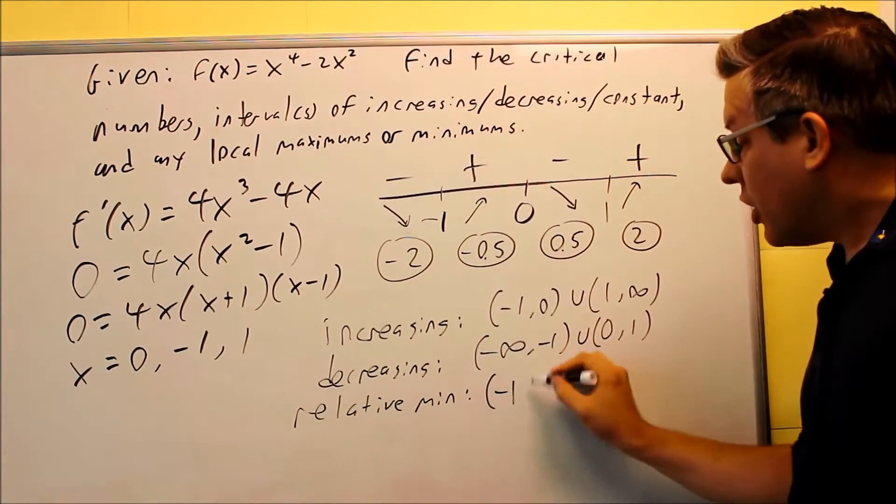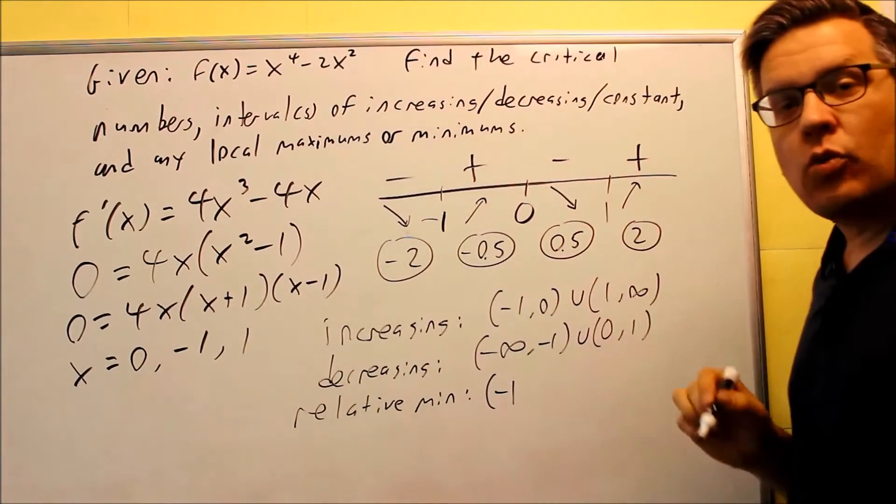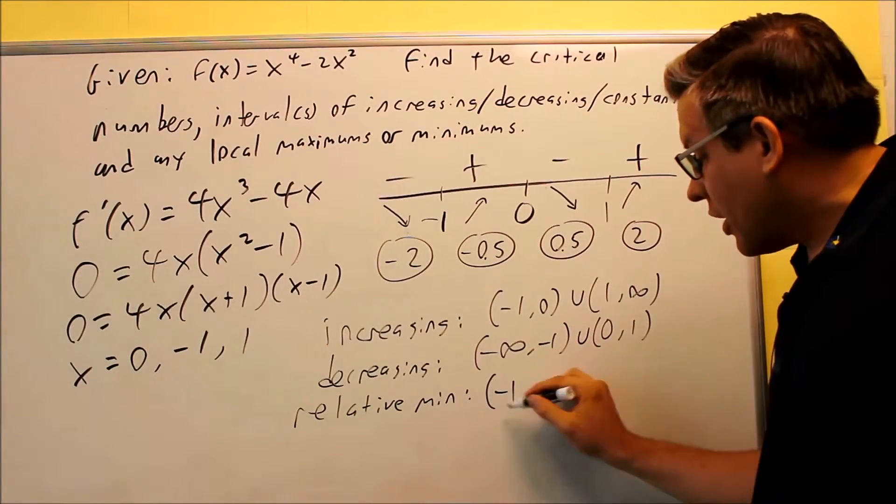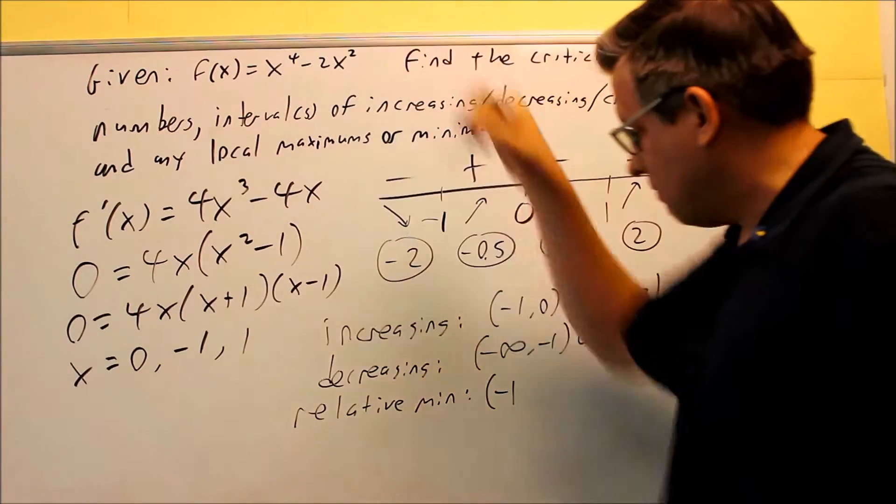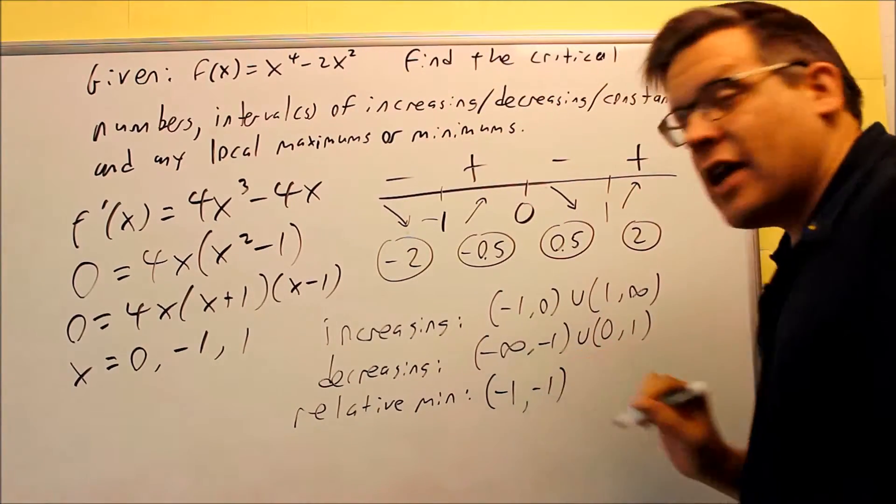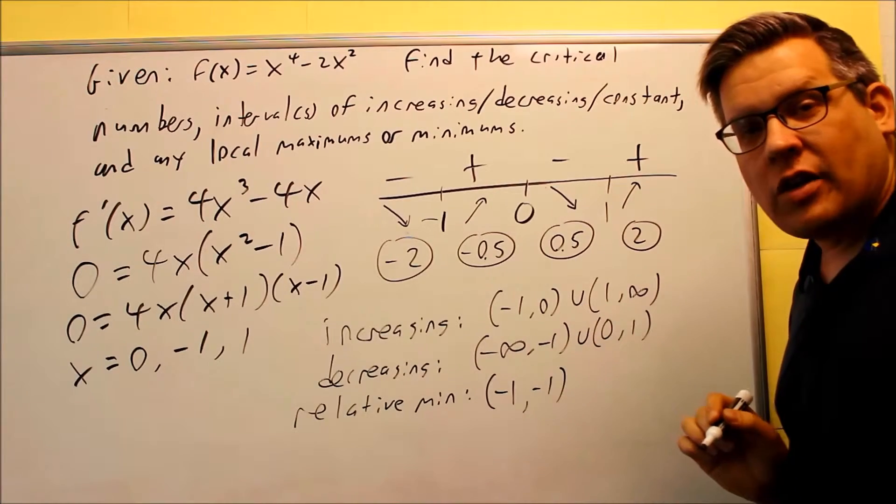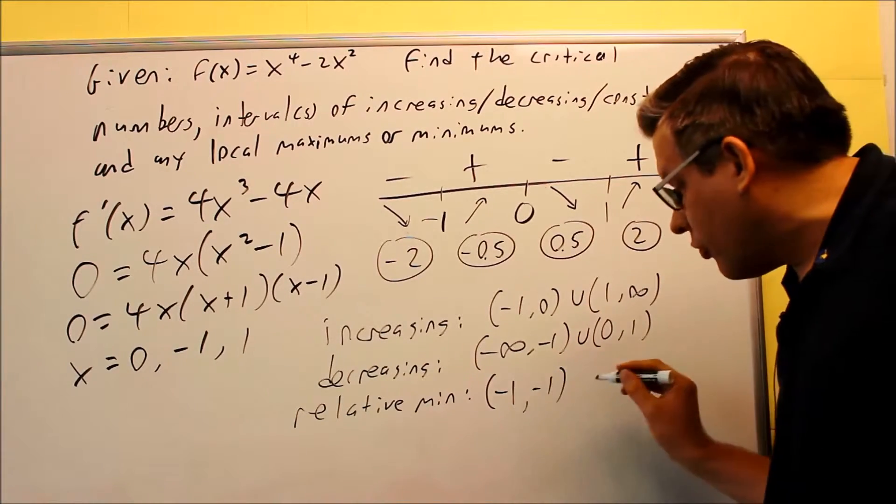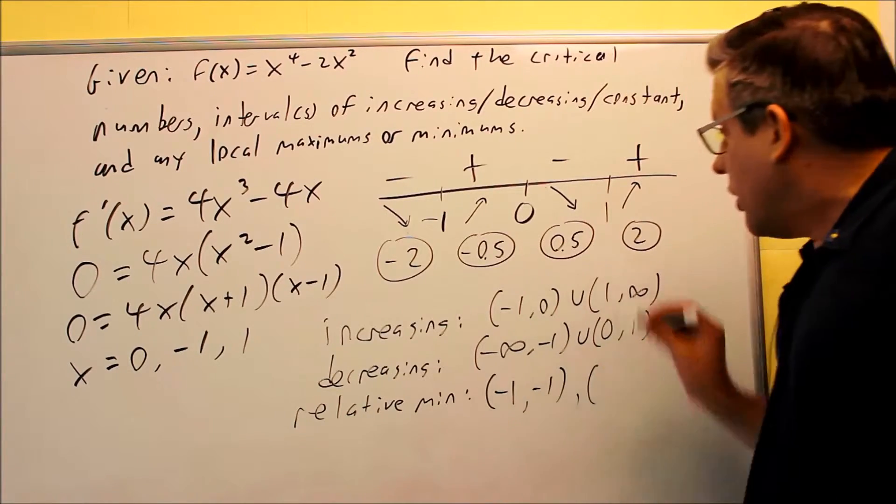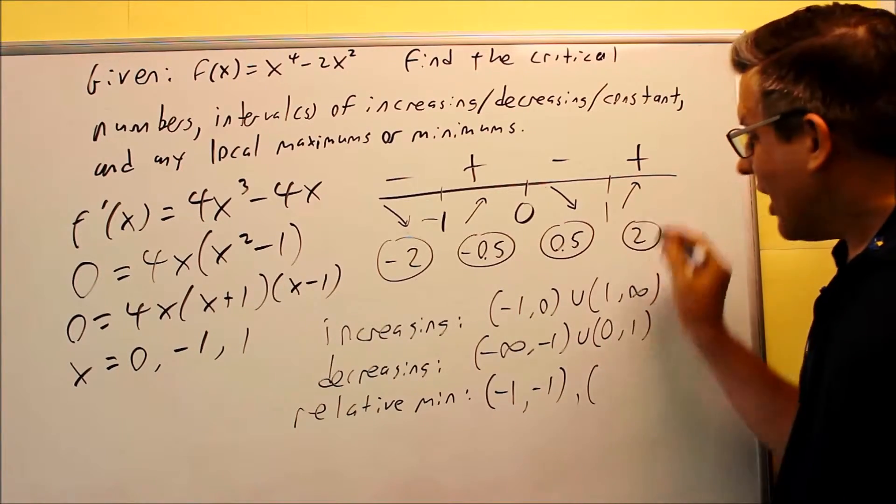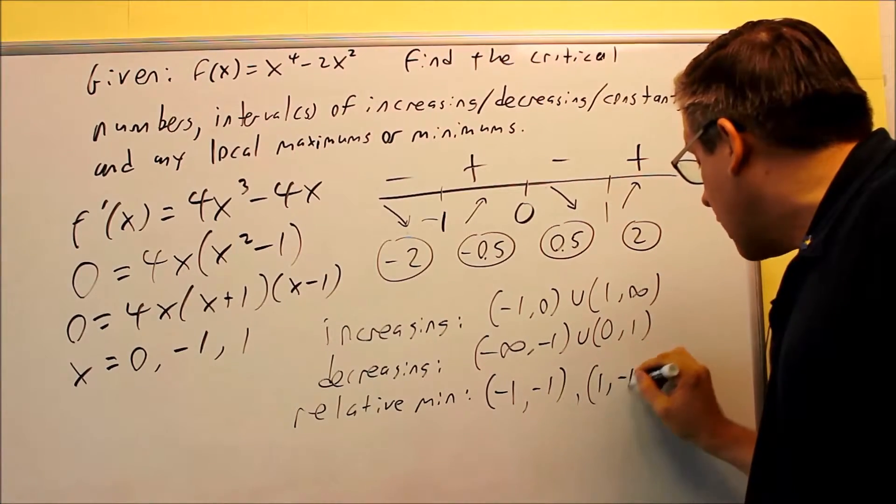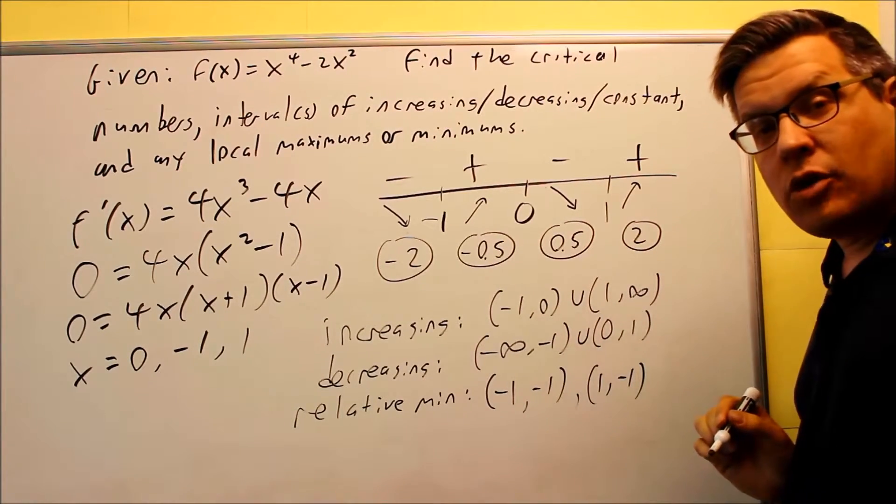So if you plug negative 1 back into here for both the x's, you're going to get negative 1. So when you write your answer, you'll write that as a coordinate if it asks for. If it says write your answer as a coordinate, you need both of them. The other one is going to happen at 1, and again we'll plug 1 back into the original one, and we get negative 1 for that also. So that's going to be your relative min.